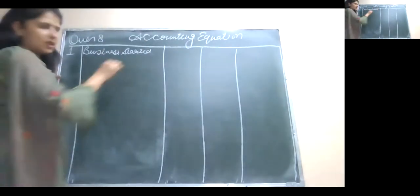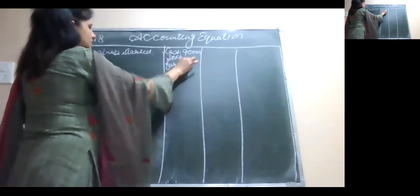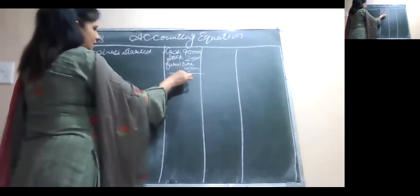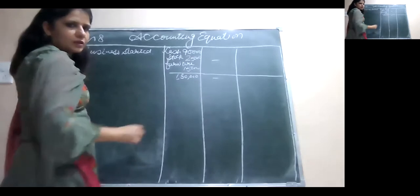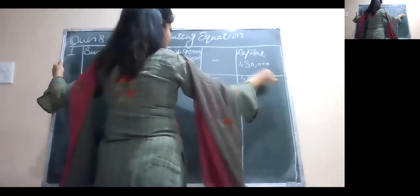Yes, business started. I have to continue with it, so that's why I am redoing it. Business started with cash of 90,000, stock of 25,000, and furniture of 15,000. So the total is 1 lakh 30,000. On the liabilities side, we have capital of 1 lakh 30,000. Draw the double line.